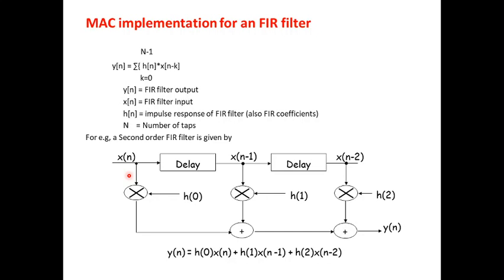x(n) delayed we get x(n-1), and again you delay you get x(n-2). When we try to implement this for y(n) equal to summation k equal to 0 to 2, we get the equation y(n) equal to h(0) into x(n) plus h(1) into x(n-1) plus h(2) into x(n-2).